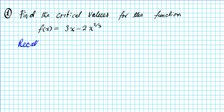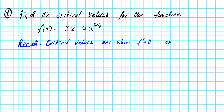Before we get started, let's go over what critical values are. Critical values occur when the derivative f'(x) is equal to 0, or when the derivative f'(x) does not exist. When the derivative is equal to 0, we have a horizontal tangent line — that is one of the situations where you have a critical value.